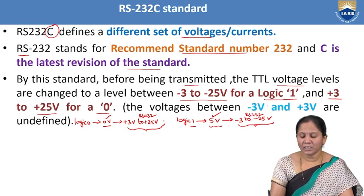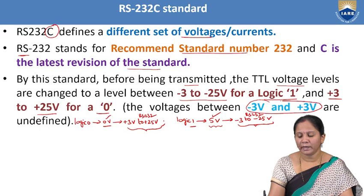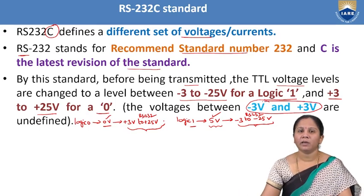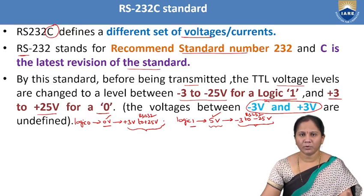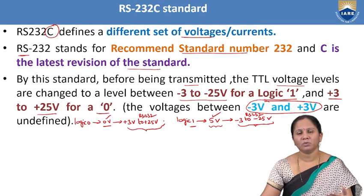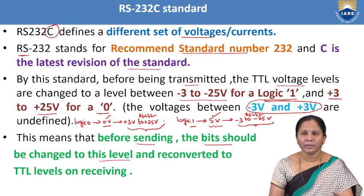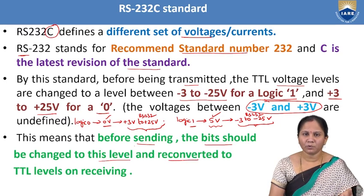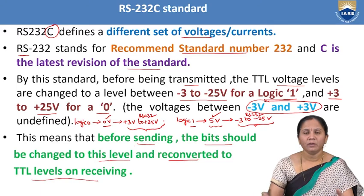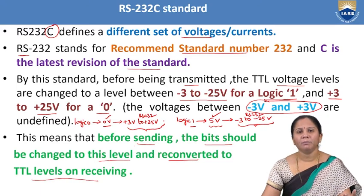The voltage range between minus 3 and plus 3 volts is undefined — we should not use those levels to represent any data. In order to avoid noise during short distance communication, it is necessary to convert TTL voltages to RS-232 voltages and RS-232 voltages back to TTL before receiving. Before sending, the bits should be changed to RS-232 levels, and that voltage level should be reconverted to TTL before receiving.